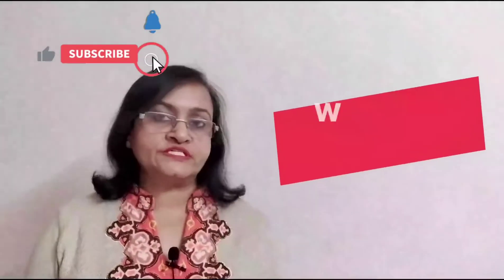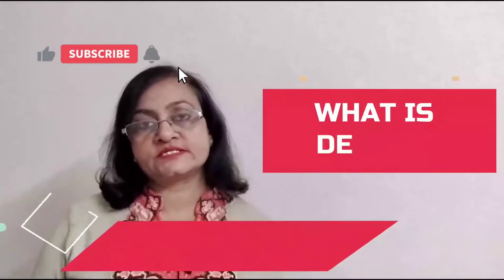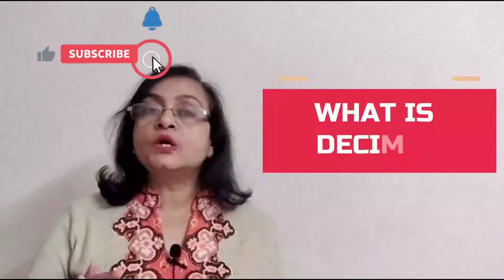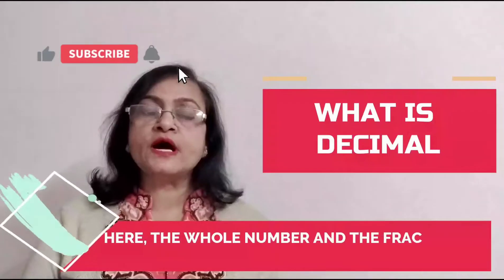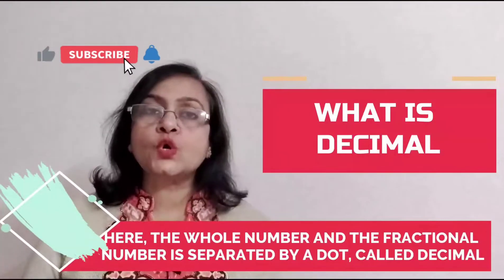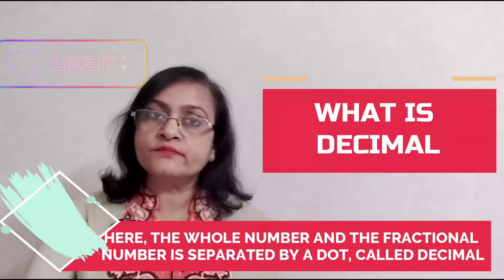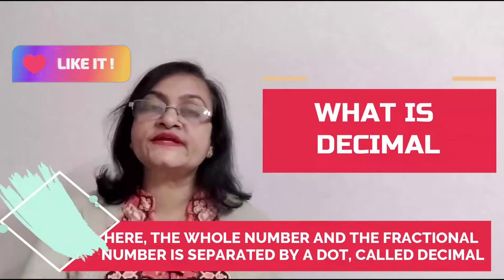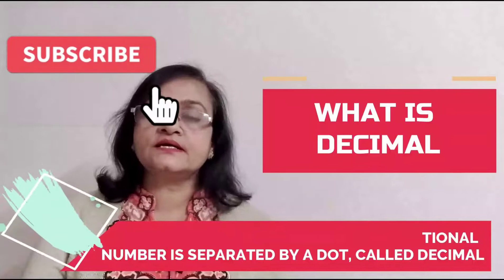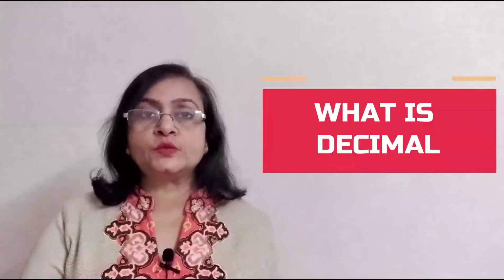Decimal hota kya hai, pehle hum yoh samajte hai. Decimal is a way to represent fractional numbers. The whole number and the fractional number are separated by a dot, which is called the decimal point. Jo dot whole number aur fractional number ko separate karta hai, alag alag karta hai, us dot ko decimal bolte hai.